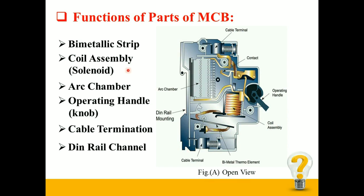Second is the coil assembly, which is also known as a solenoid. This is the coil assembly shown in the open view. It is generally made up of copper. This coil assembly provides protection against short circuit conditions.